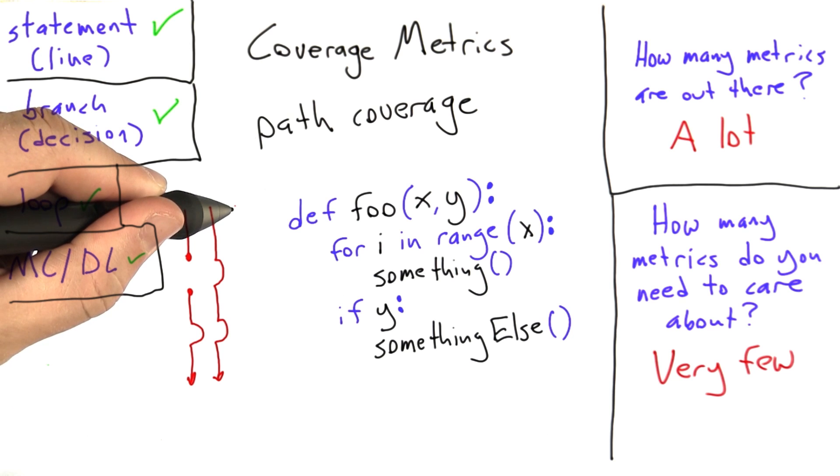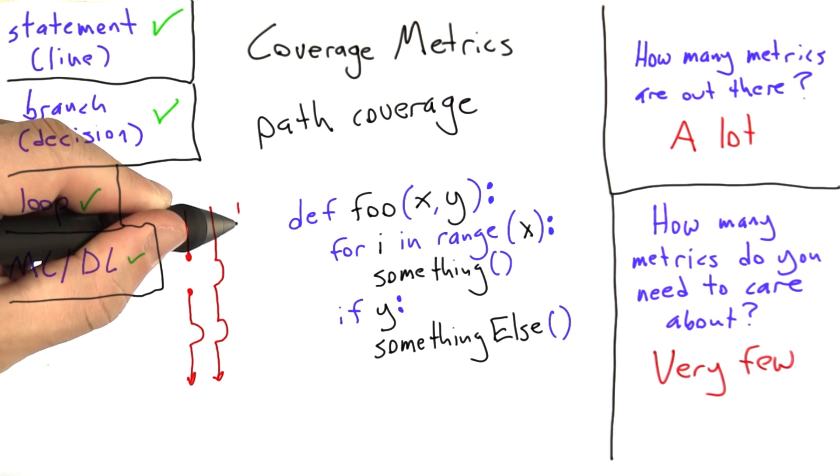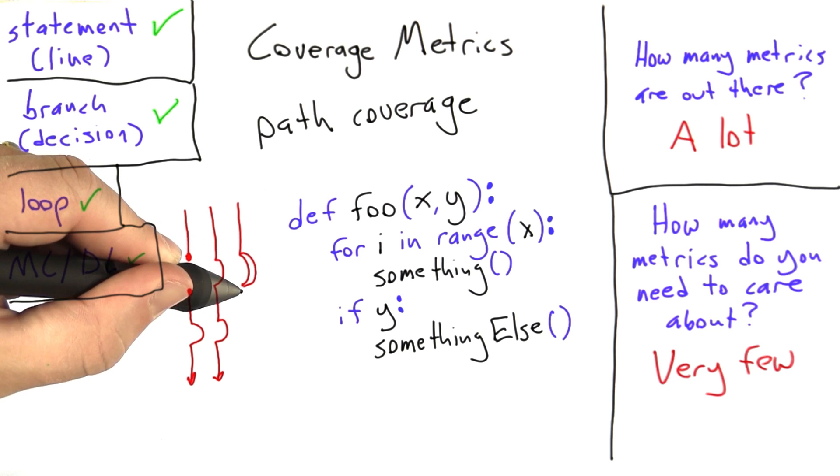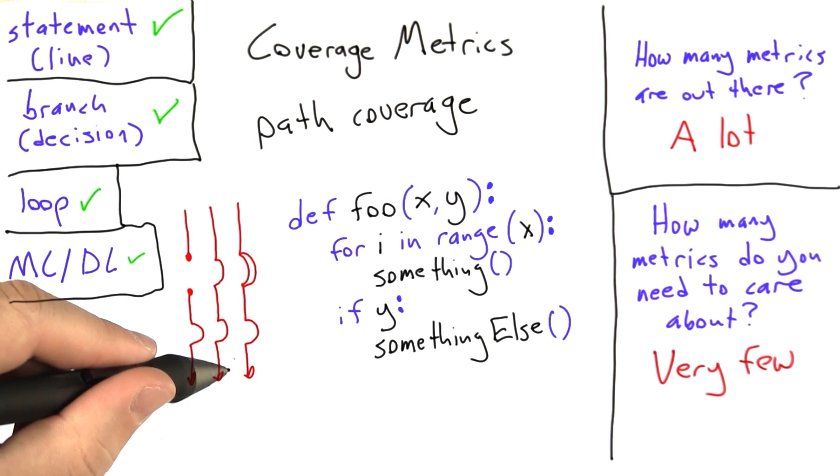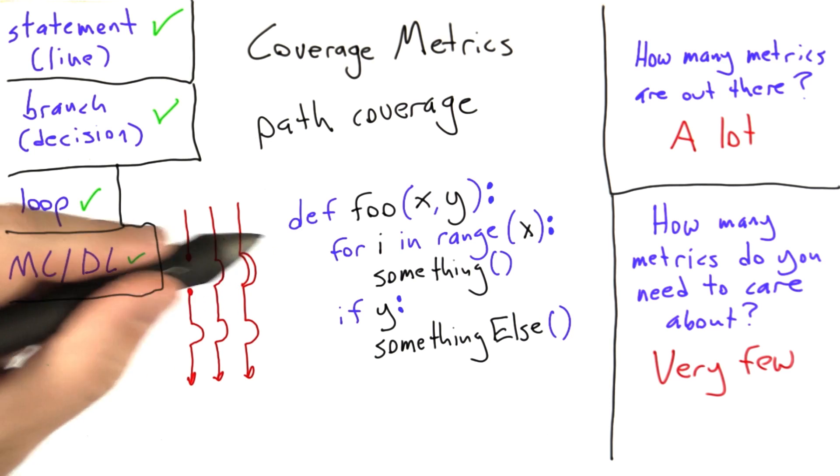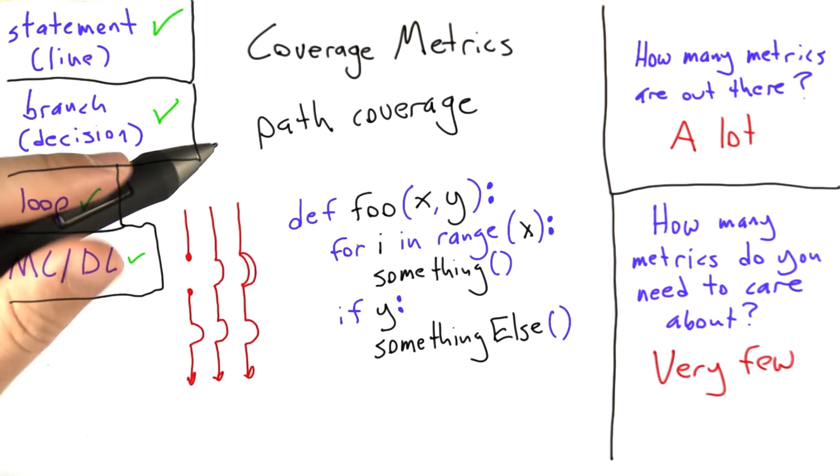Now if we execute it a third time with x coming in as 2, we're going to execute something, go back, execute it again, execute something else, and leave. This again is a distinct path through the code because we made a different set of decisions when we got to branch points in the code.